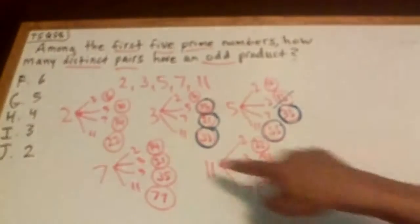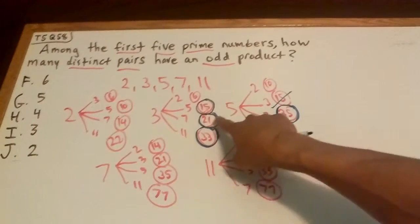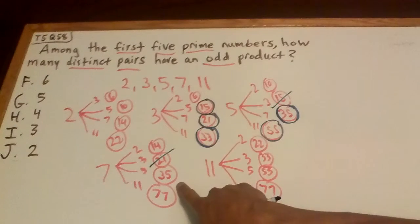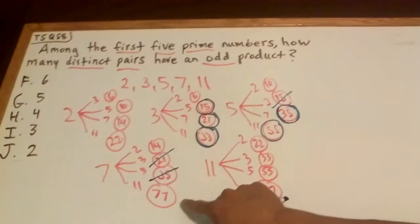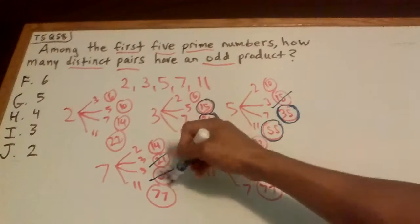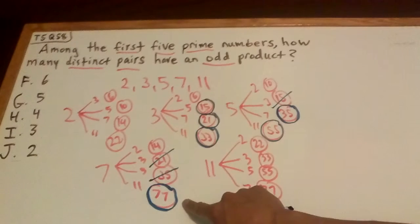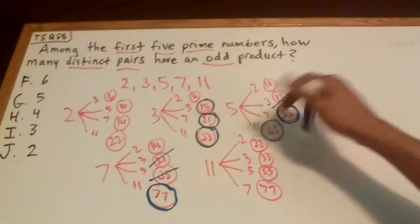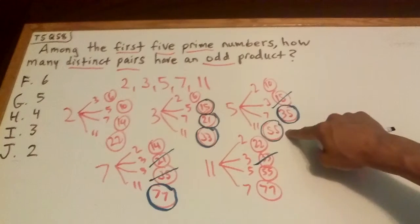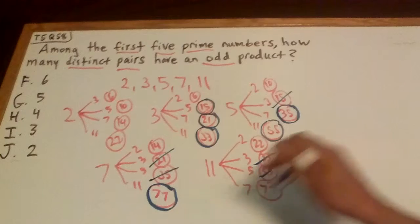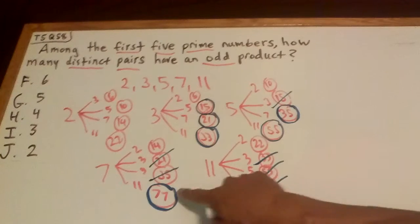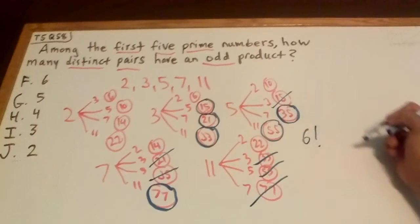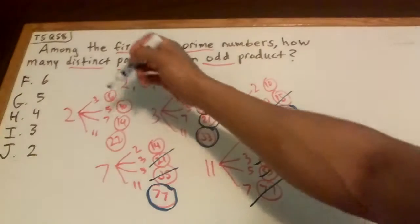How about 14? That's even. How about 21? That's good but it appears already—it can appear more than once. How about 35? That's good too but look, it's also there, so not you buddy. How about 77? Yep, 77 is odd and it's the first time it appears. How about 22? That's even. How about 33? That's odd but it appears—cross it out. How about 55? It's odd but it appears. How about 77? It's odd but it appears. So let's just count our circles now: one, two, three, four, five, six. Six. There you have it, that's the answer. The answer is F, six is right there.